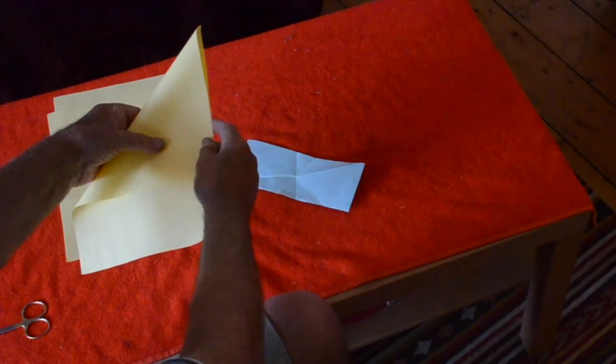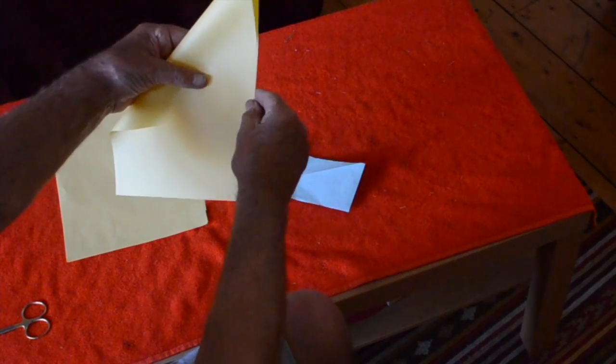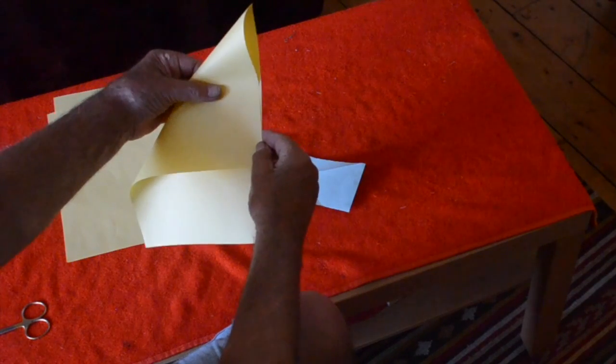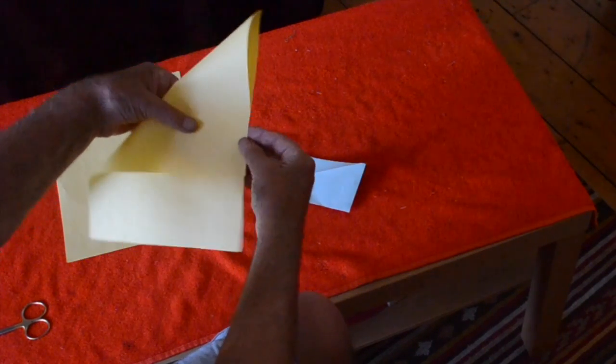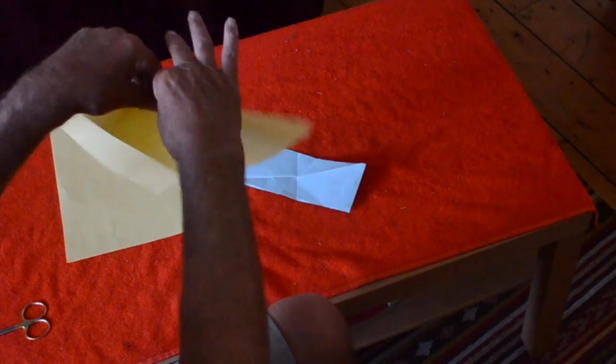A4 sheets are in the proportions sides 1 to root 2 and that works for all the A4, A3, A2 sizes all the way down. It's always 1 to root 2, the proportions.